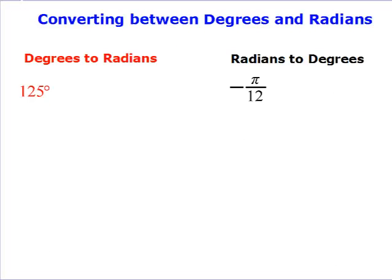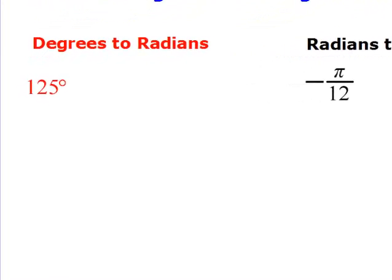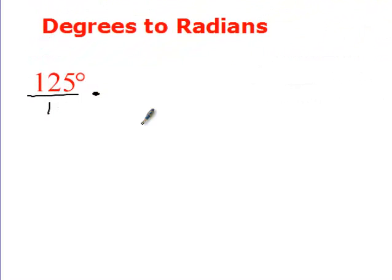So to convert between degrees and radians, if you notice on the unit circle, what do you know about 180 and pi? Are they the same or are they different? They're the same. So pi over 180 is actually the exact same thing as 1. So if you look at all of our radian measures, it's pi on top or on bottom. Look at all of your radian measures on your unit circle. It's pi on top or on bottom.